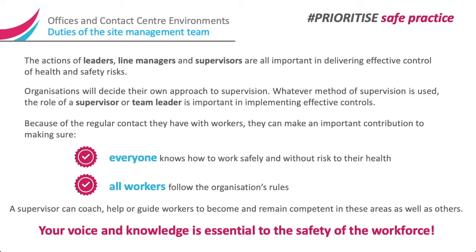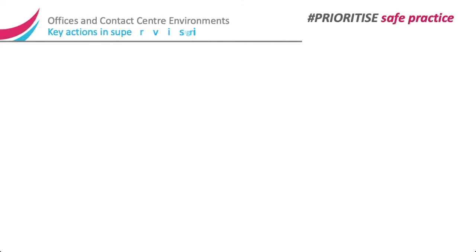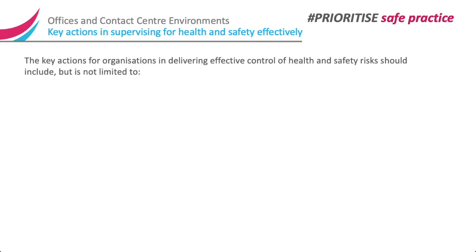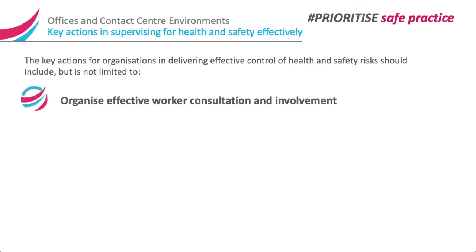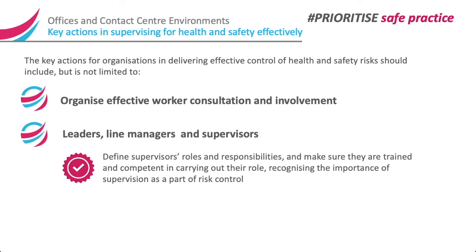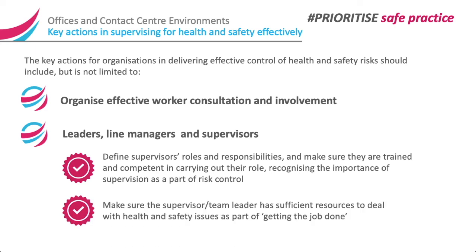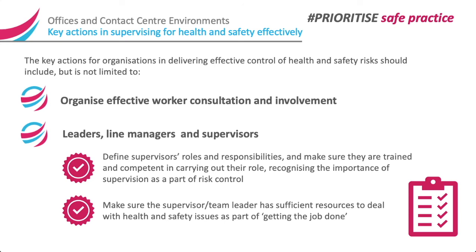Your voice and knowledge is essential to the safety of the workforce. The key actions for organisations in delivering effective control of health and safety risks should include, but is not limited to: organise effective worker consultation and involvement; define supervisors' roles and responsibilities and make sure they are trained and competent in carrying out their role; recognise the importance of supervision as a part of risk control; and make sure the supervisor or team leader has sufficient resources to deal with health and safety issues as part of getting the job done.